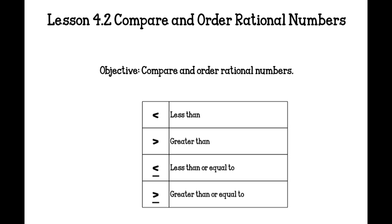Let's review our symbols. This circle or this angle is the less than symbol, the greater than, the less than and equal to, or the greater than or equal to.